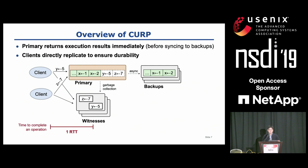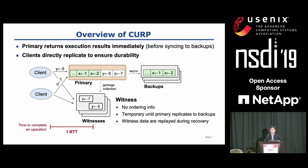This figure shows the overview of CURP. Like regular primary backup replication, a client sends RPC requests to a primary node and the primary node syncs the execution results to backups. But in CURP, a primary returns the execution result immediately back to the client and doesn't wait for the completion of syncs to backups, so clients can see the execution results within one RTT. Instead of waiting for syncs to backups, to ensure the durability of operations, clients replicate their request to a small temporary remote store called witnesses. Witnesses don't retain any ordering information, so clients can replicate their request directly before serialization at the primary. It is a temporary storage to ensure durability just until the operation is synced to backups.